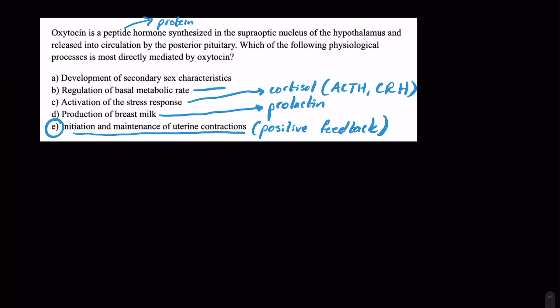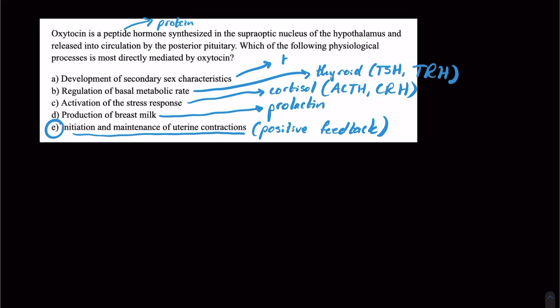Regulation of the basal metabolic rate, that's going to be more thyroid hormone, which again is regulated by TSH in the anterior pituitary and TRH in the hypothalamus. And development of secondary sex characteristics is going to be under the purview of our steroid hormones like testosterone, estrogen, progesterone. And those are going to be released by FSH from the anterior pituitary, which is regulated by gonadotropin-releasing hormone in the hypothalamus.